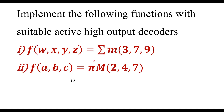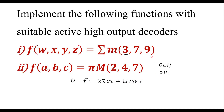The variables are w, x, y, z. The function f can be written as: minterm 3 is 0,0,1,1 which is w̄x̄yz; minterm 7 is 0,1,1,1 which is w̄xyz; and minterm 9 is 1,0,0,1 which is wx̄ȳz.